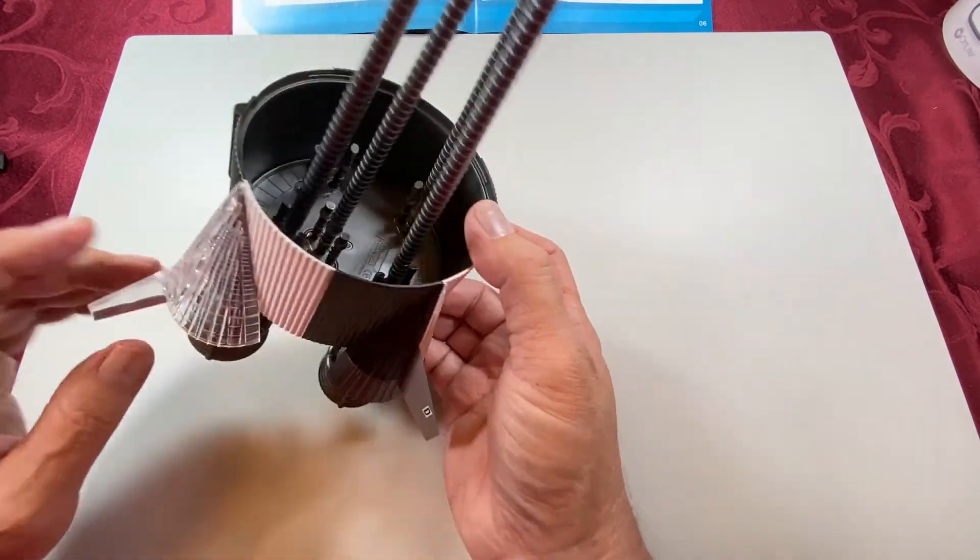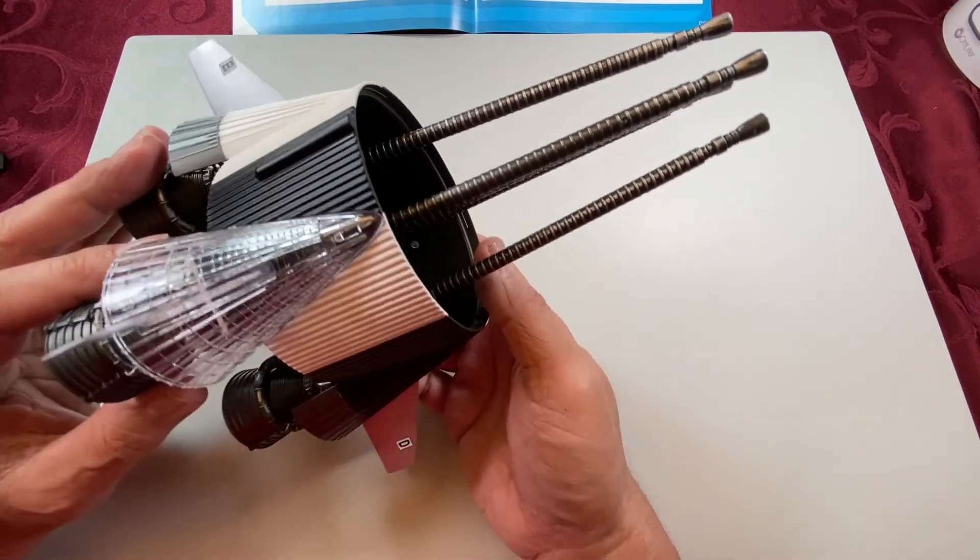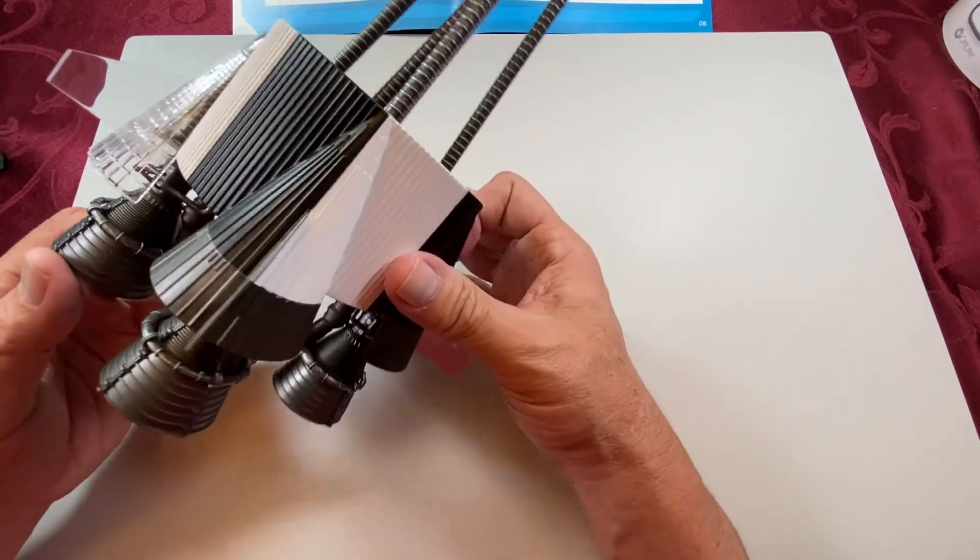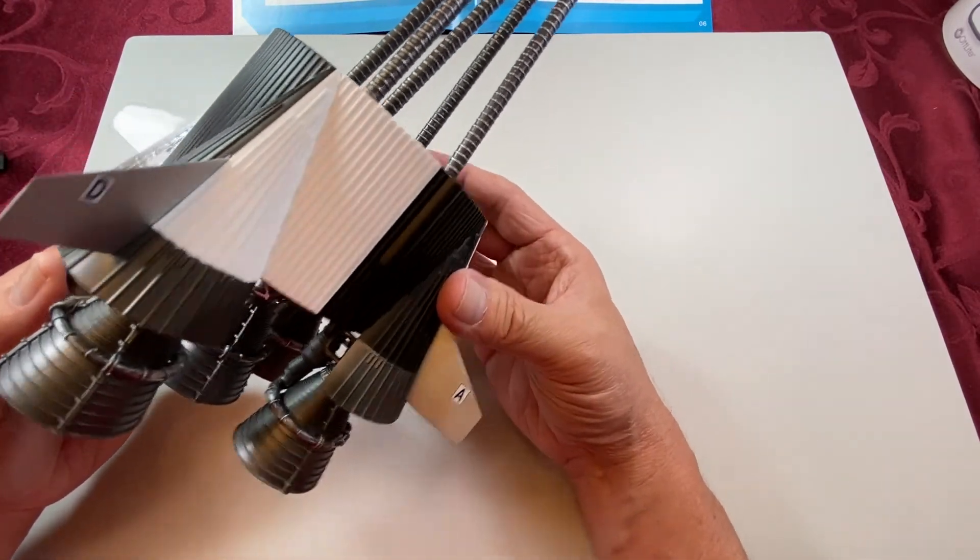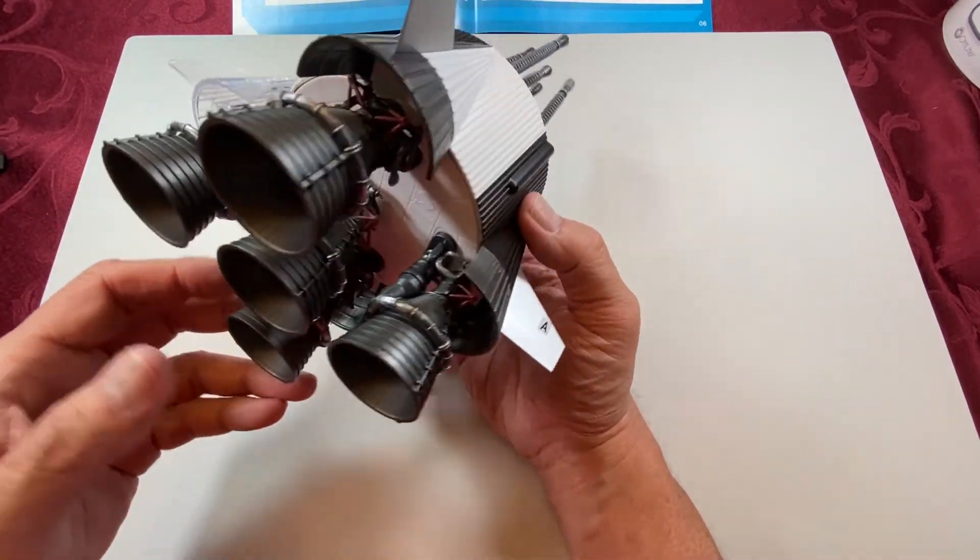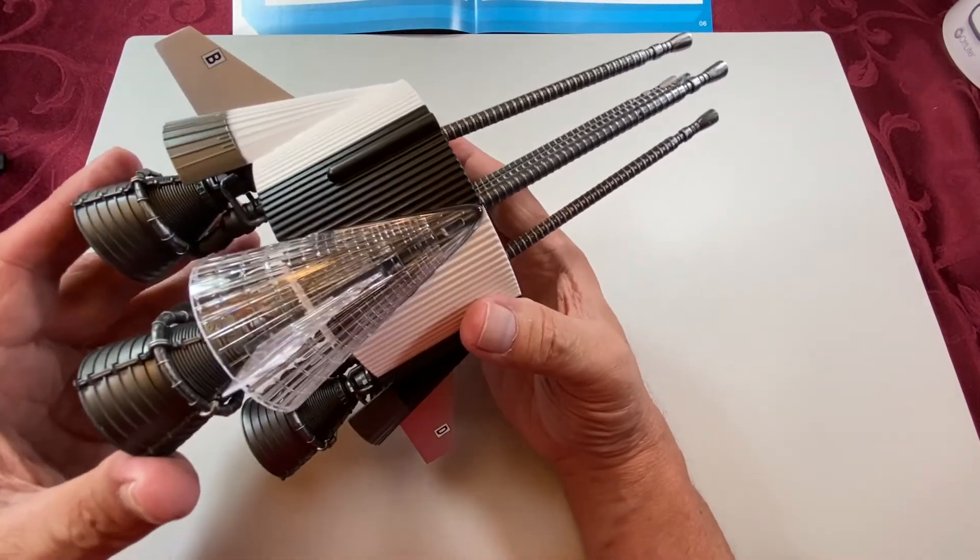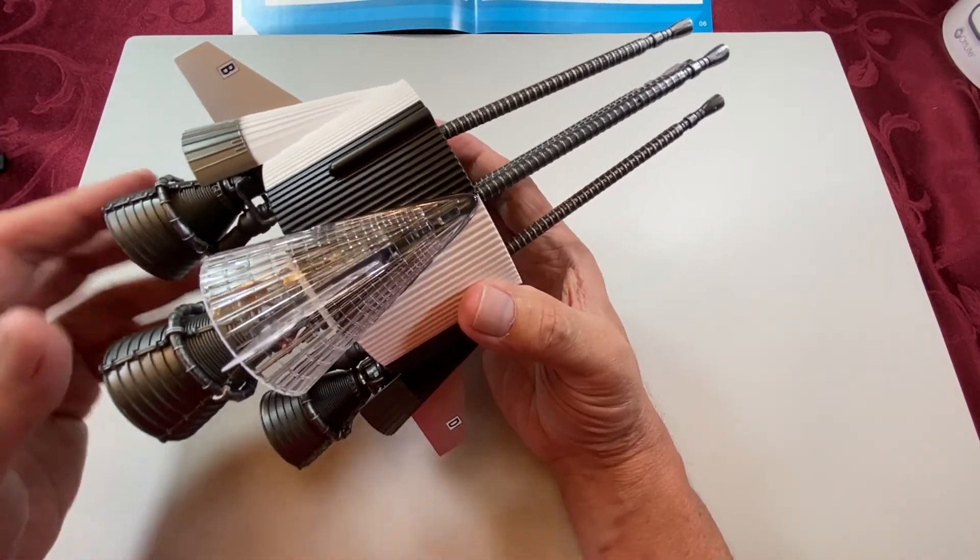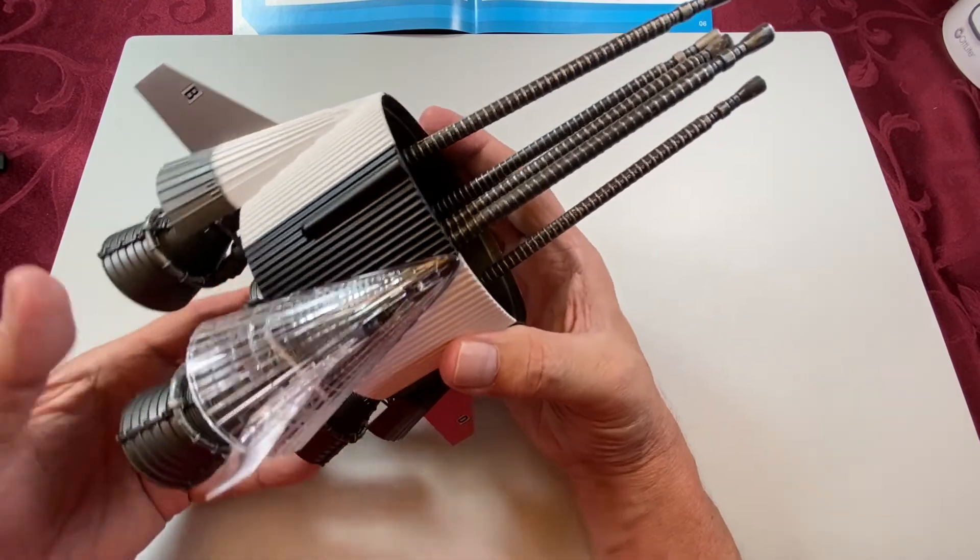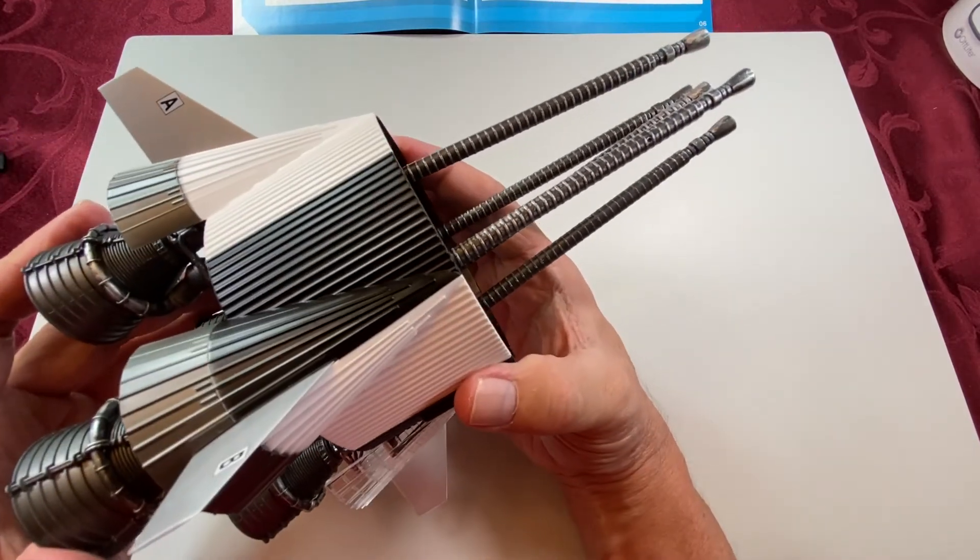There we have the completed thrust structure for the bottom of the first stage. Next, we'll move on to assembling the first stage components, mostly the liquid oxygen and the fuel tanks.